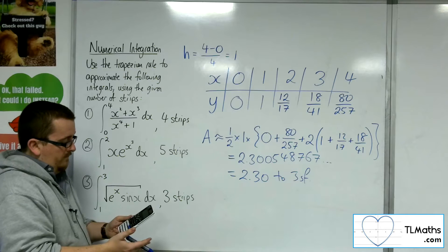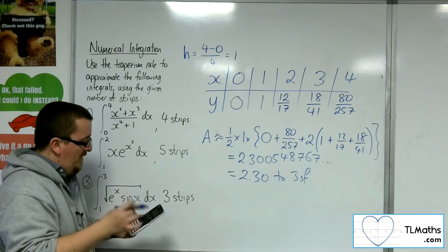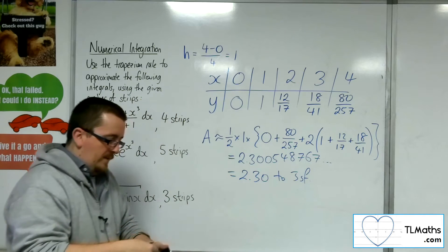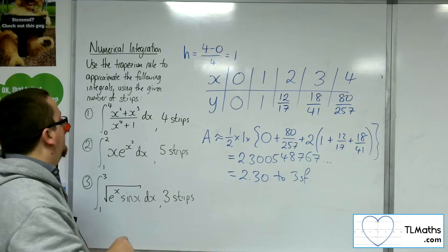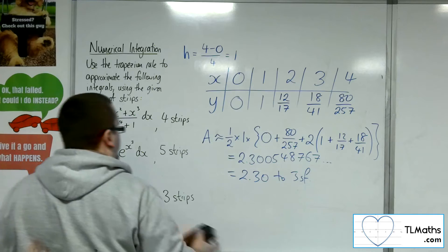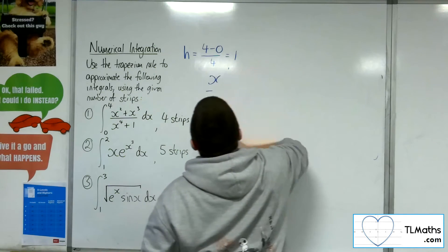Thinking. Still thinking. There we are. 2.248. So reasonable. So 2.248 on the calculator. 2.30 by the Trapezium rule. So let's have a look at the next one.